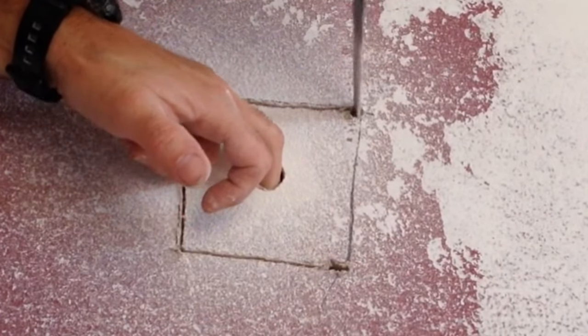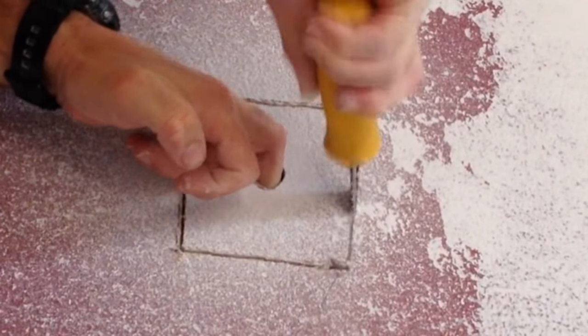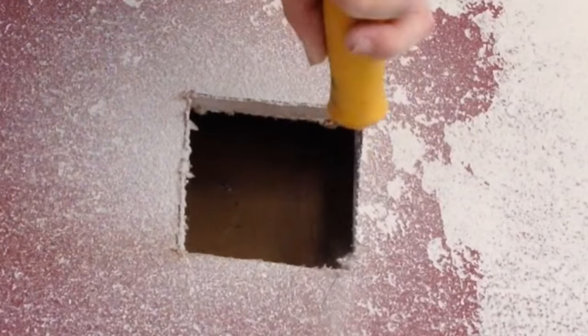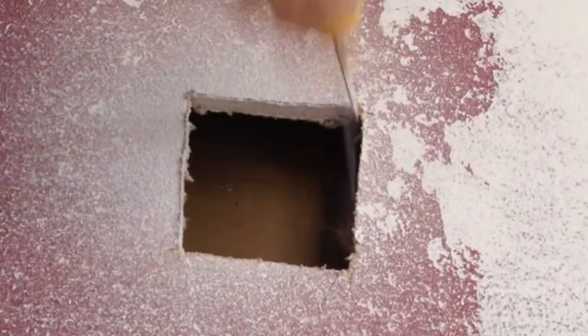One last cut here and we'll have a perfect square just like the small piece of drywall I cut. Get that out of the way, get the dust out, kind of square it off a little bit.